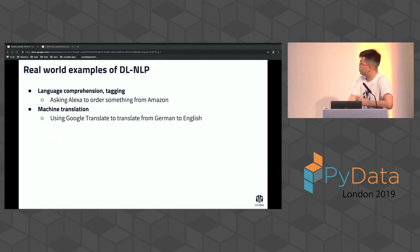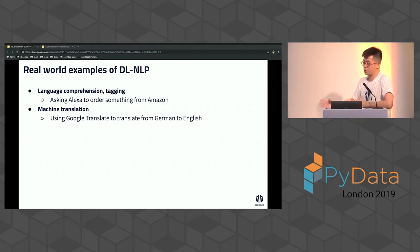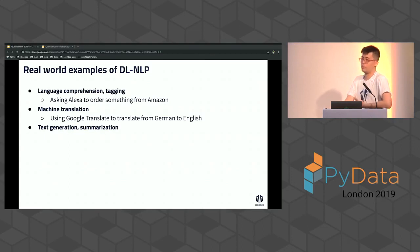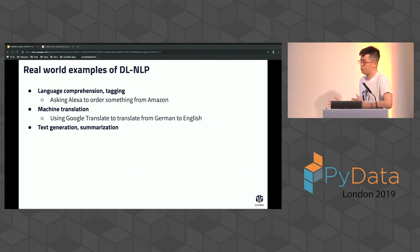Machine translation: you have a text as input and a text as output — like Google Translate. We'll introduce how to turn one sequence into a different sequence. Text generation: given some text as a seed, you let the model start writing its own article. Or summarization: given a very long text, you find the most important parts and use a language model to generate a summary that makes sense.